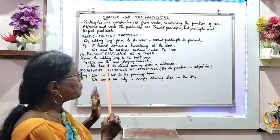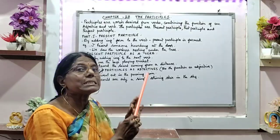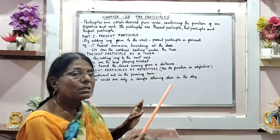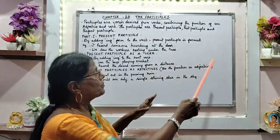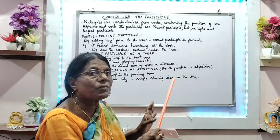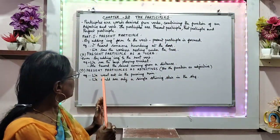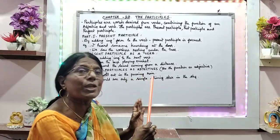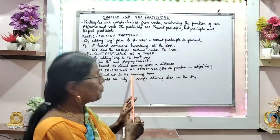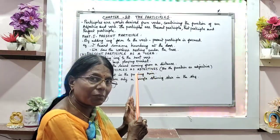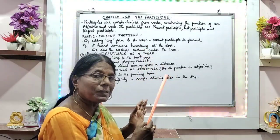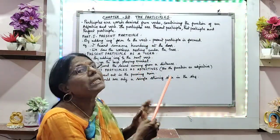The next is present participle used as an adjective, which means they do the work of an adjective, the function of an adjective. Example here: we went out in the pouring rain. Rain is the noun. Pouring is the participle which does the function of an adjective.